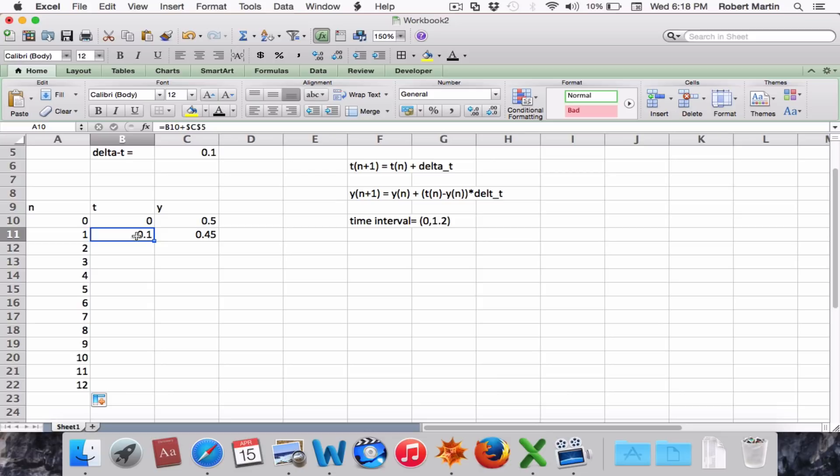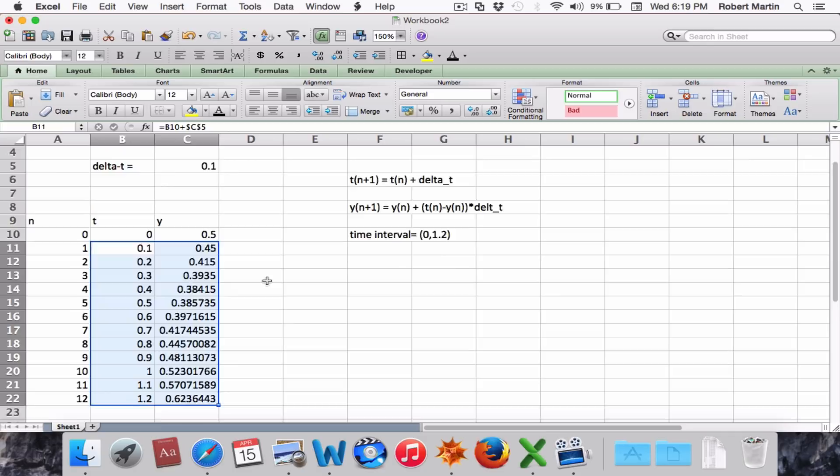Now we want to compute the t and y values. We do this by selecting t and y, and when we see the fill down, simply double-click on that, and it will fill the formula down. It will iterate our functions. There they are.